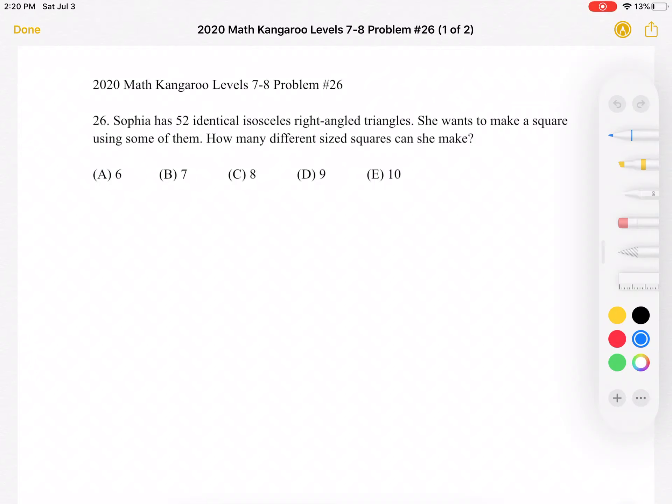This is the 2020 Math Kangaroo, level 7-8, problem number 26. Sophia has 52 identical isosceles right-angled triangles. She wants to make a square using some of them. How many different size squares can she make?